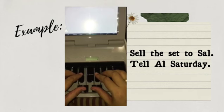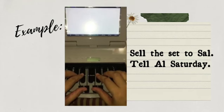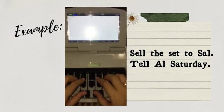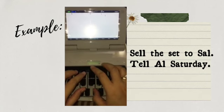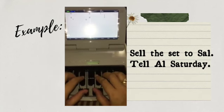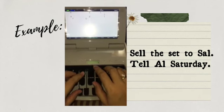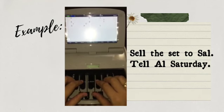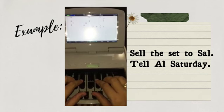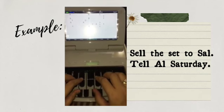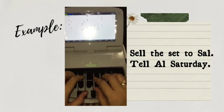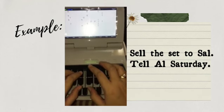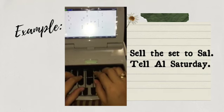Here we can see the English words — two sentences on the right side, and on the left side is a video on how these sentences are written. So we have: 'sell the set to sell', period. Another is 'tell Al Saturday', period. That is how you write these sentences. It's easy, right?